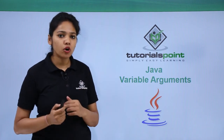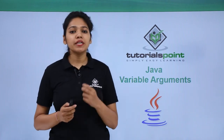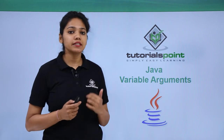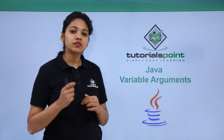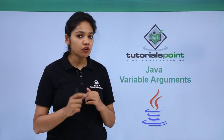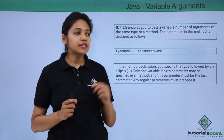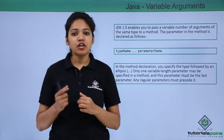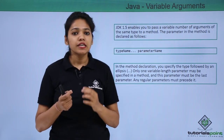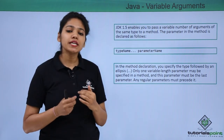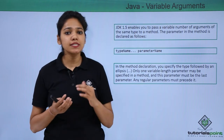What is a variable argument? A variable argument is a feature that was added in Java 5, that is JDK 1.5. This argument is also written in many languages like C, C++, etc.